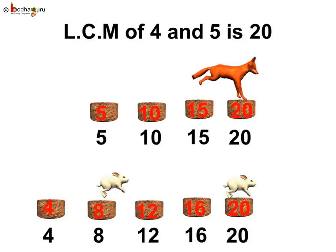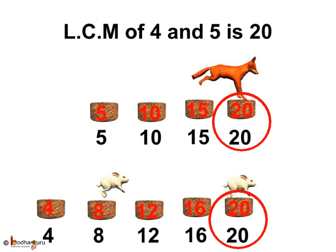When the Fox and the Rabbit were jumping in multiples of 5 and 4 respectively, the first common stone both used was 20. The multiples of 4 are 4, 8, 12, 16, 20, etc. And the multiples of 5 are 5, 10, 15, 20, etc. Here, 20 is the lowest common multiple of 4 and 5. So, we say 20 is the LCM of 4 and 5.